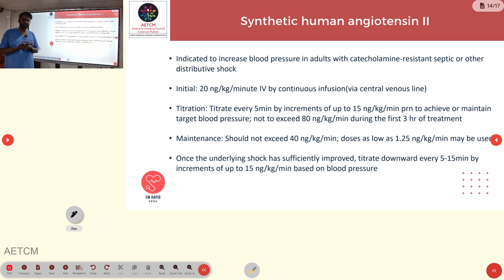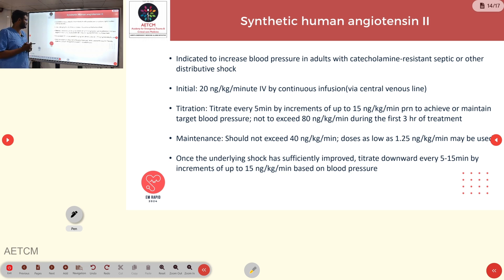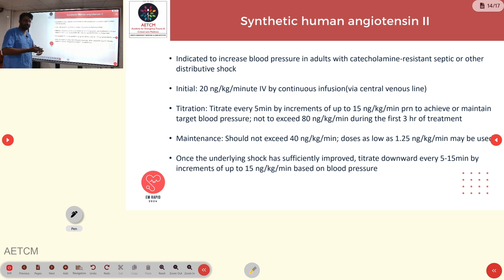A newer option for sepsis is human angiotensin II, which can be used in patients with catecholamine-resistant septic or distributive shock. The initial dose is 20 nanograms per kg per minute as a continuous infusion, which can be titrated up to 50 nanograms per kg per minute to achieve target blood pressure. It can then be maintained at up to 40 nanograms per kg per minute, and once MAP is above 65, titrated down to around 15 nanograms per kg per minute.